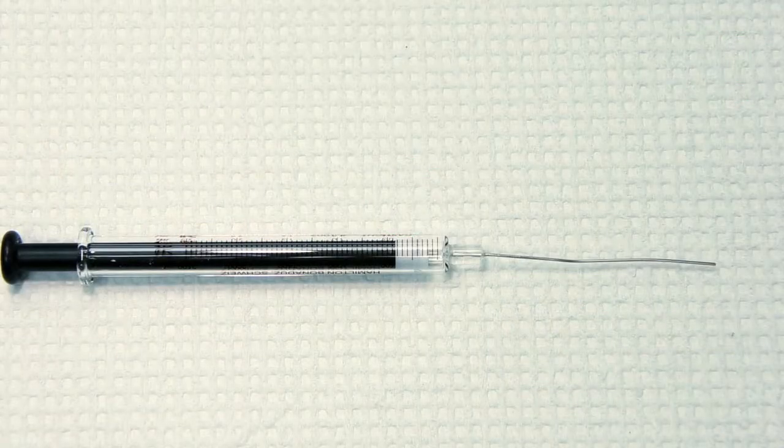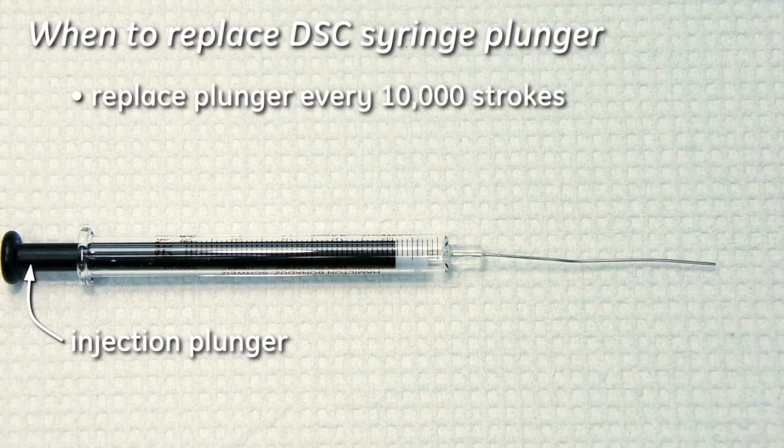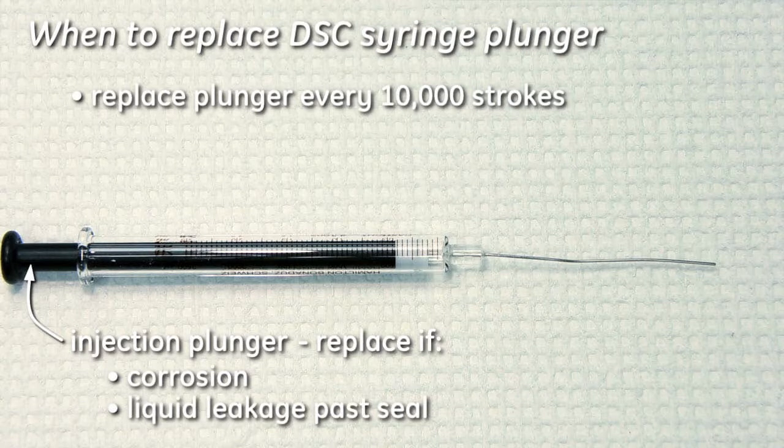The DSC syringe plunger should be replaced at least every 10,000 strokes. You also want to replace the injection plunger if you see obvious corrosion around the lower black area or the lower white area of the piston, or if you see leakage between the plunger and the glass.